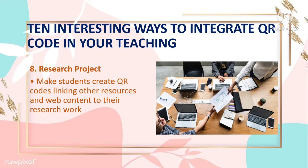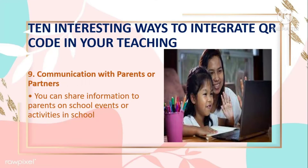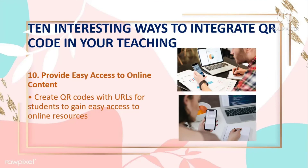Seventh: Research Project. Have students create QR codes linking to other resources and web content to support their research work. Eighth: Communication with Parents or Partners. You can share information about school events or activities with parents. However, be sure to orient the parents on how to use the QR codes. Ninth: Provide Easy Access to Online Content. Create QR codes with URLs for students to gain easy access to online resources, since a long URL may result in a broken link version making resources inaccessible.